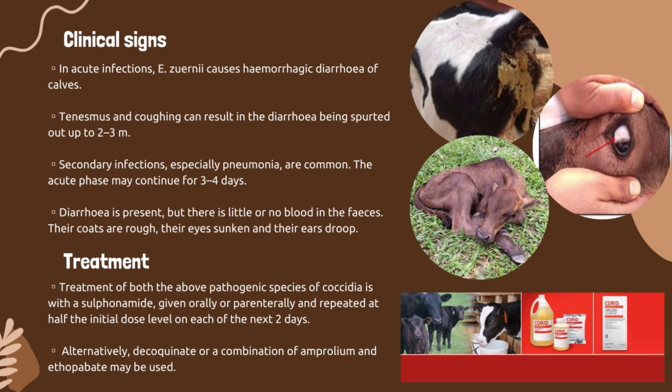The acute phase may continue for three to four days. If the calf does not die in seven to ten days, it will probably recover. Eimeria zuernii may also cause a more chronic form of disease where diarrhea is present but with little or no blood in the feces. Animals are emaciated, dehydrated, weak, and listless, with rough coats, sunken eyes, and drooping ears.